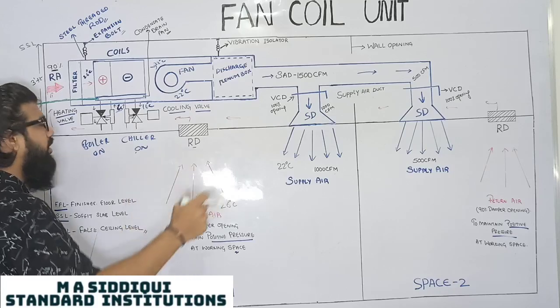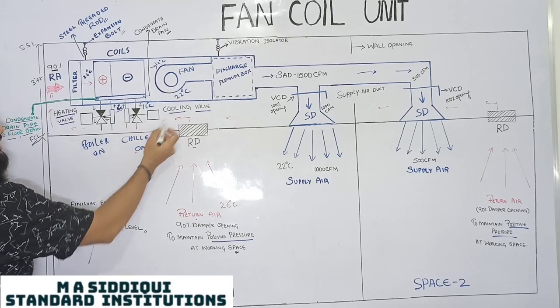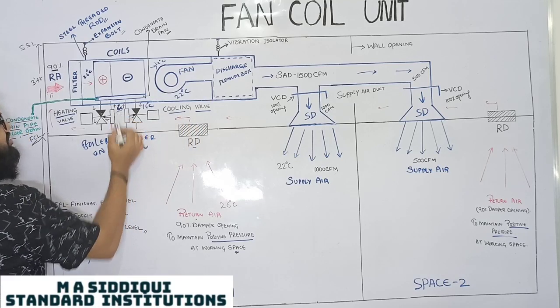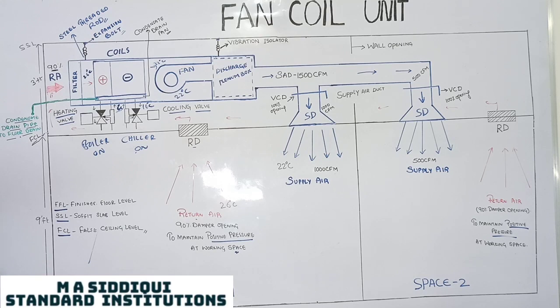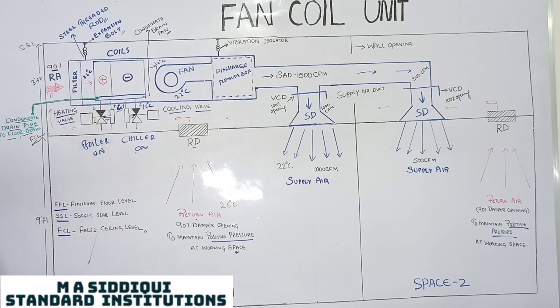So this filtered return air of 26 degrees Celsius has to be cooled or heated. If we want to cool, definitely this valve assembly will get open. That means the cooling valve gets open and from the chiller, we will be getting 6 degree chilled water. If we want to heat this space, the chiller will be off and the boiler section gets on and the high temperature water will enter into the coil.